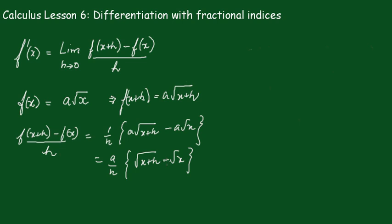What we'll do here is multiply the numerator and denominator by the conjugate. So this becomes a/h times (√(x+h) minus √x), and we multiply by (√(x+h) plus √x) over (√(x+h) plus √x).